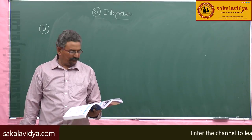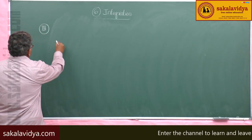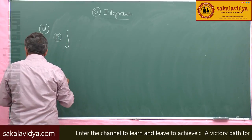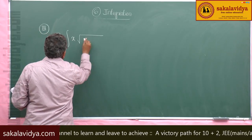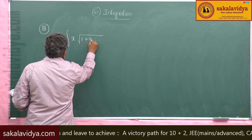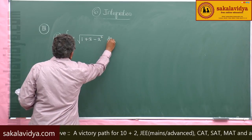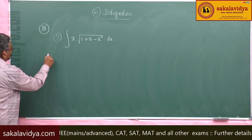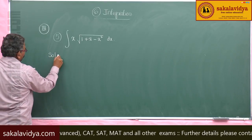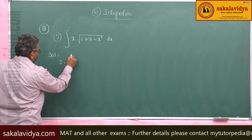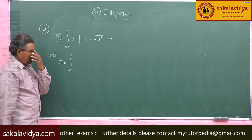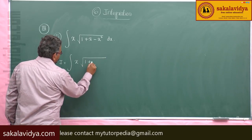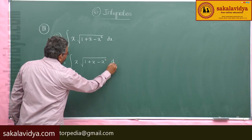Next, fifth problem. Evaluate the integral of x times root of (1 plus x minus x squared) dx. So I equals the integral of x times root of (1 plus x minus x squared) dx.